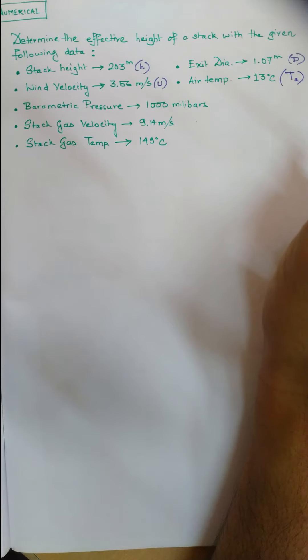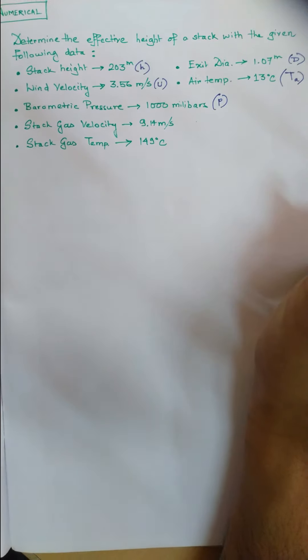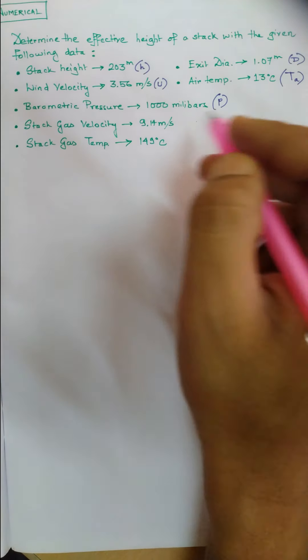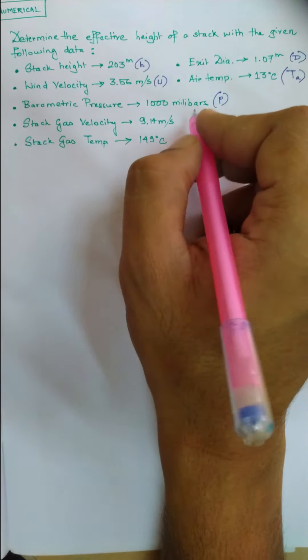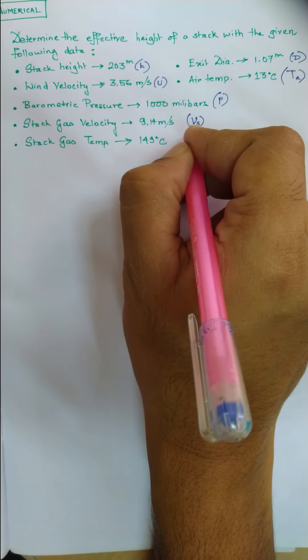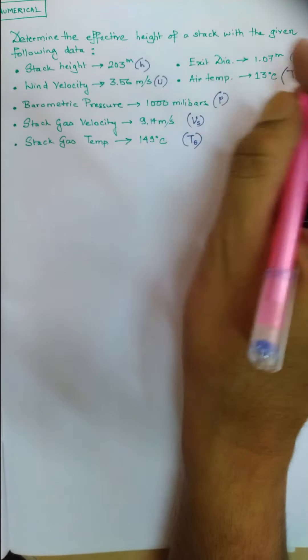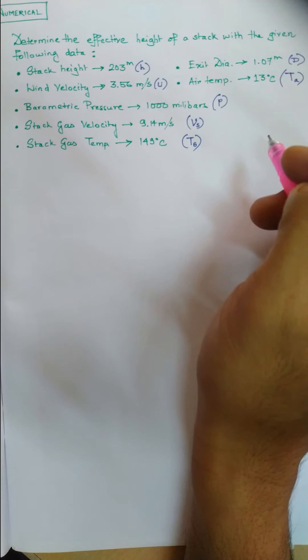which is Ta. We also have the barometric pressure, which is p. We have the stack gas velocity which is Vs, and the stack gas temperature which is Ts. So we have each and every component given in this problem.